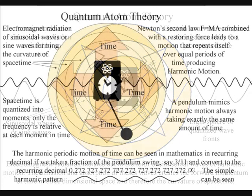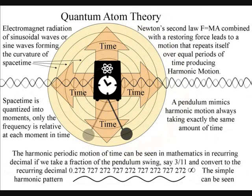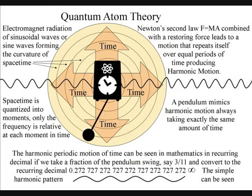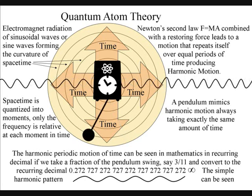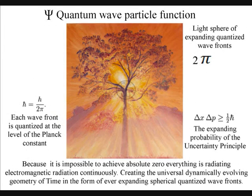In quantum atom theory, the arrow of time is formed by the forward momentum of electromagnetic radiation from each individual atom. Just like ripples on a pond, each atom will radiate out light spheres of quantized wavefronts.